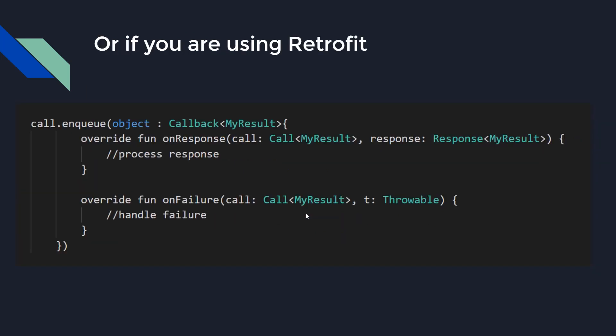Another example is when you are using Retrofit for network calls. Retrofit wraps the network operation in a call instance and then we call the enqueue function to perform the network request. Here we have two functions: onResponse to process the response and onFailure to handle the errors. On both solutions we are using callbacks, which is a little long and complicated but still works and is an okay solution for many use cases.